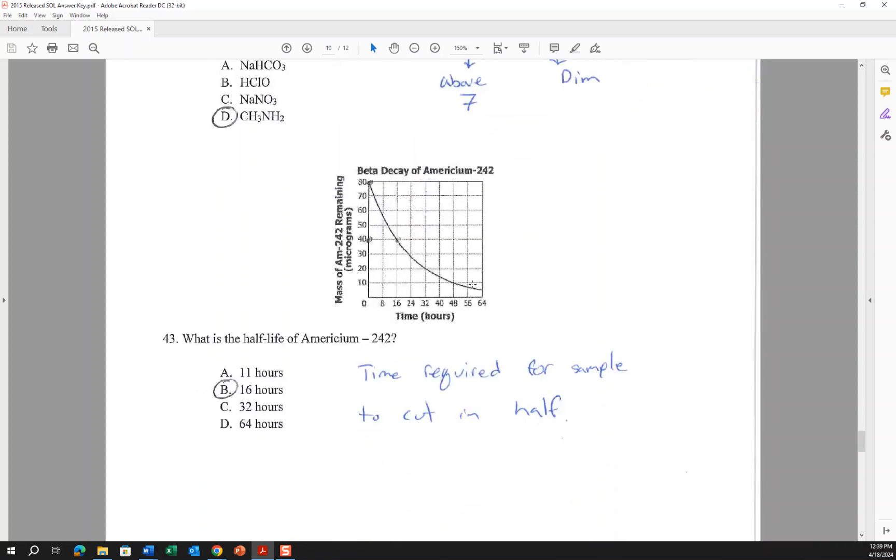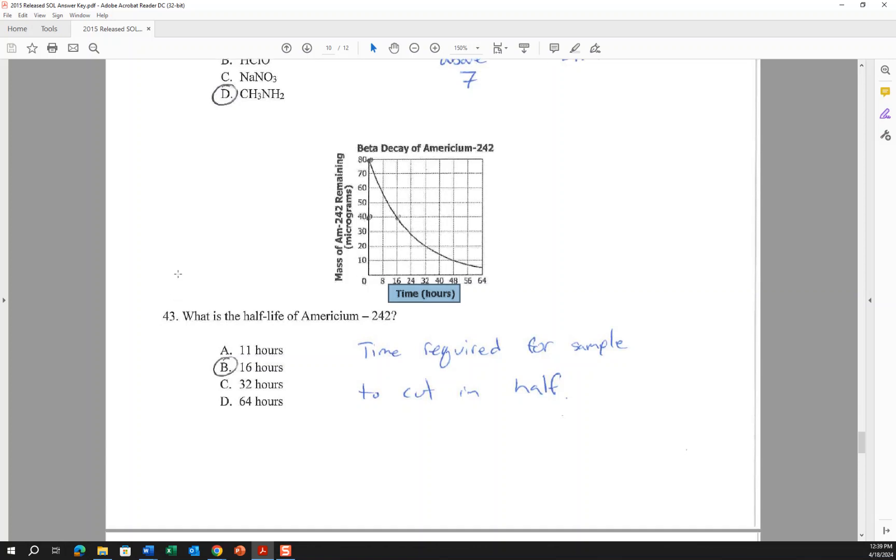Here we got a half-life graph. Without even reading the question, we're starting at 80. What's half of 80? 40, and it took 16 hours. Look what happens after another 16 hours. If we go from 16 hours to 32 hours, we went from 40 to 20, so we cut in half again. So every 16 hours the sample is cutting in half. The half-life is 16 hours, and that's what the question asks. If you see a graph like that and you're asked for half-life, just find a place where you can see where it cut in half and how long it took to cut in half.